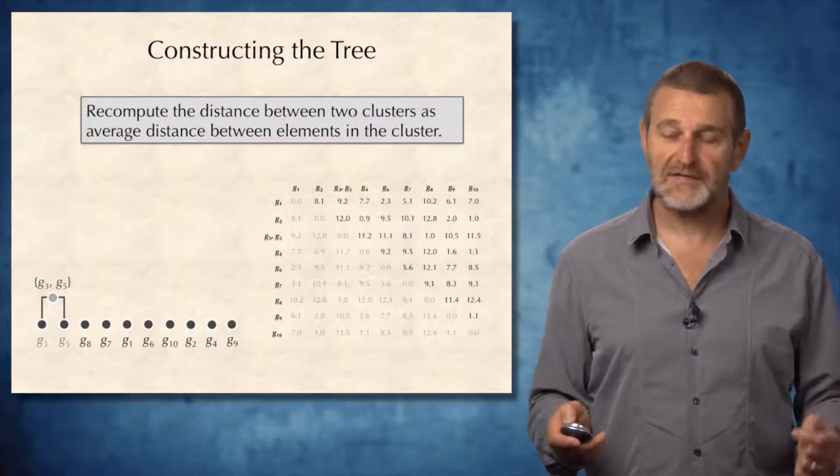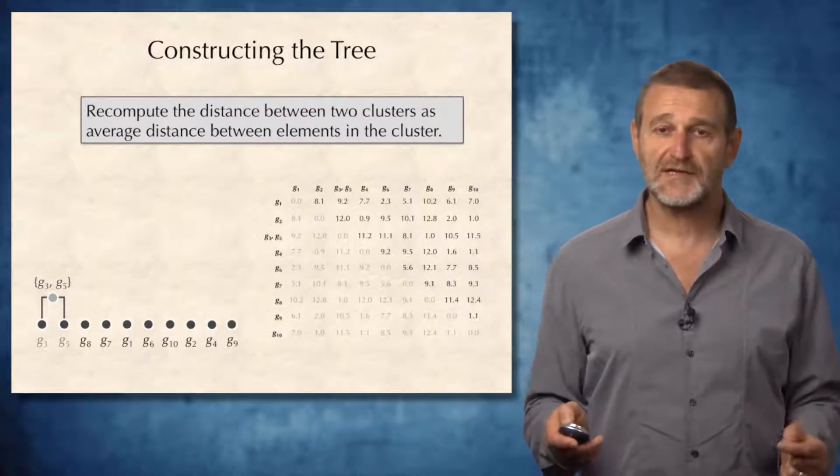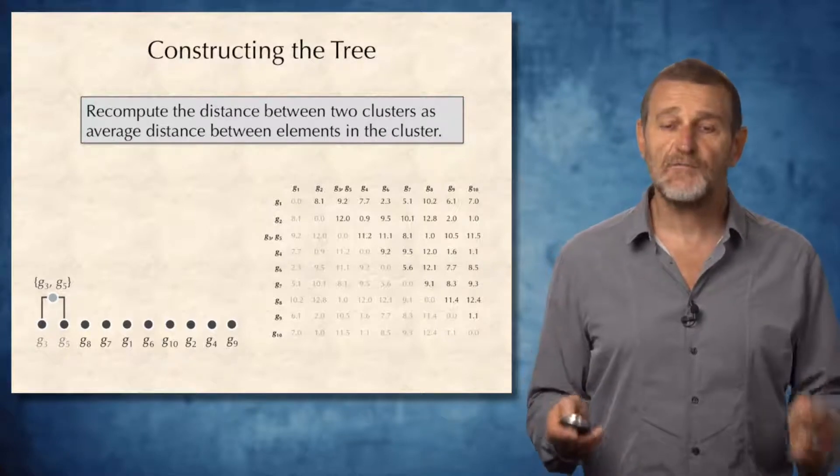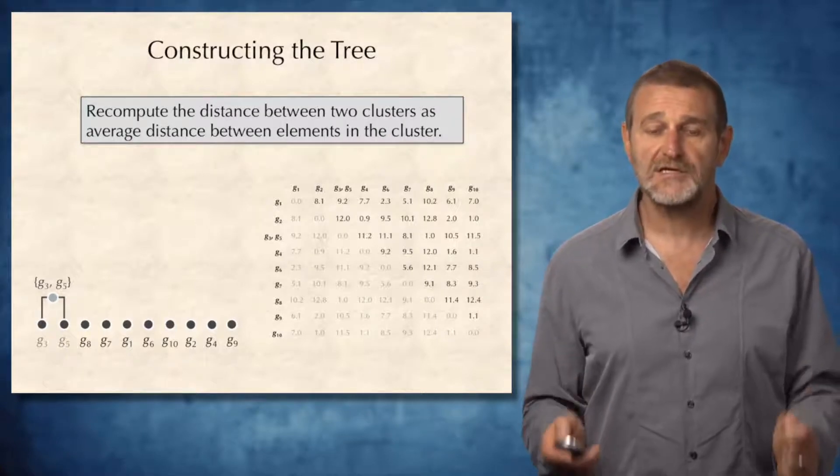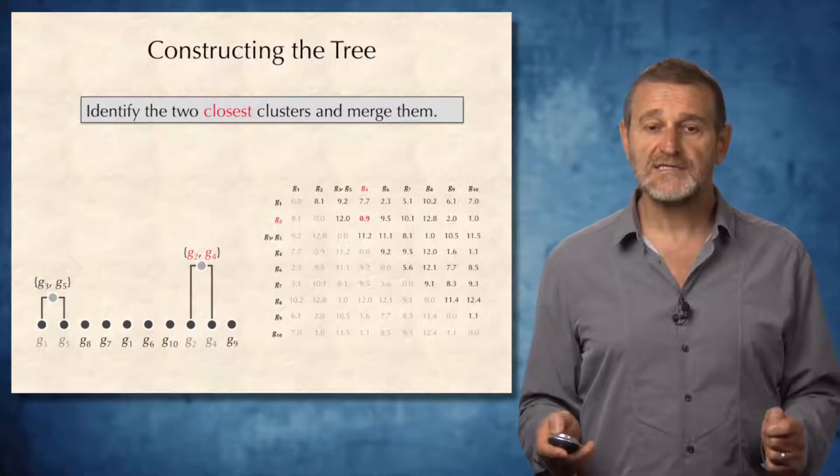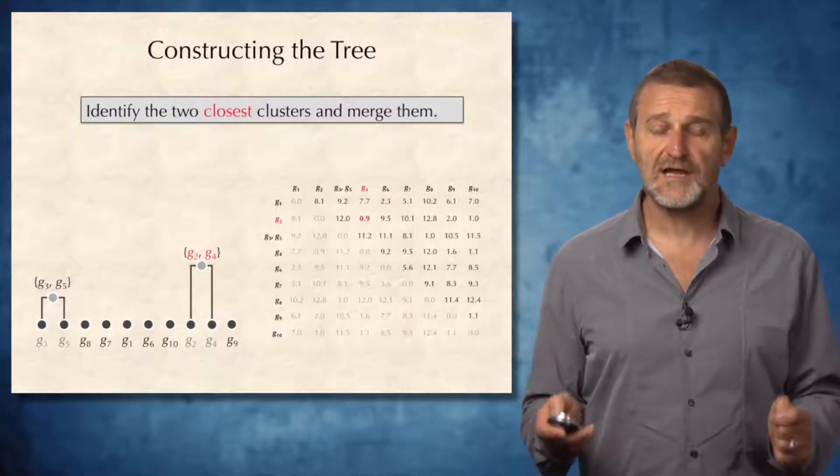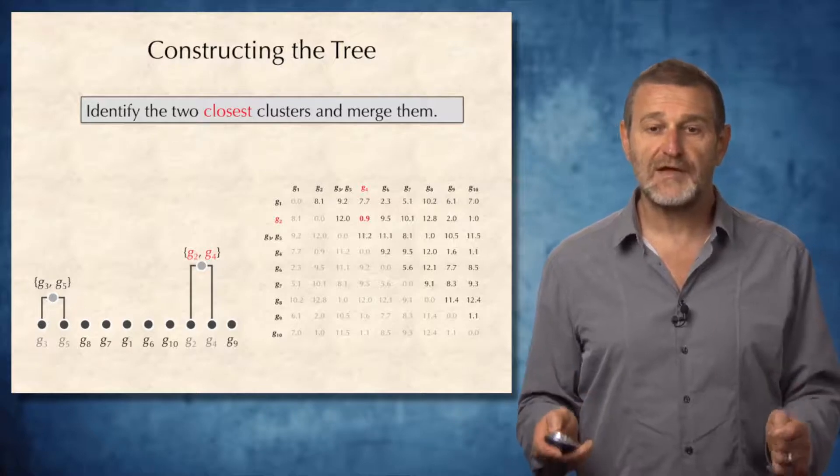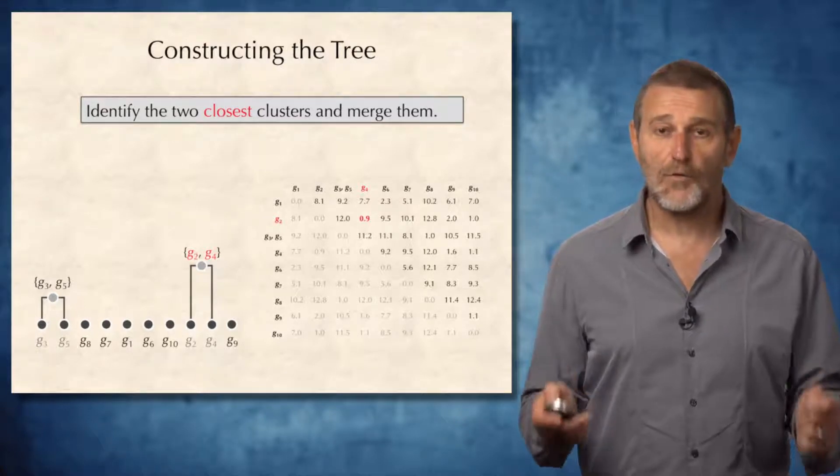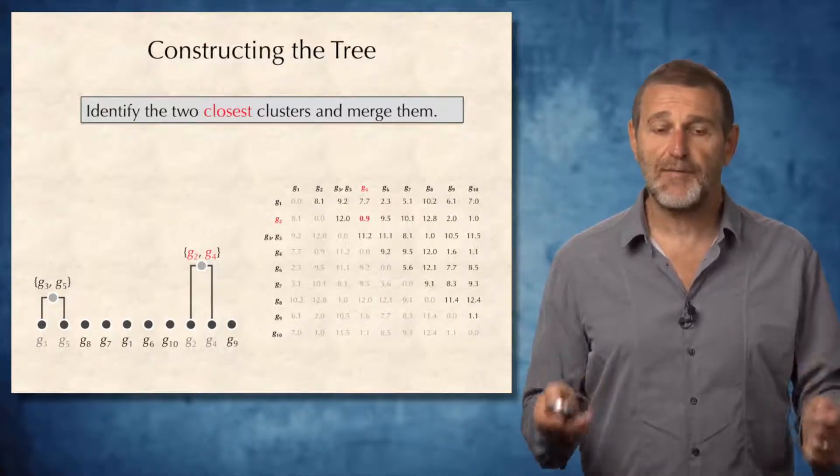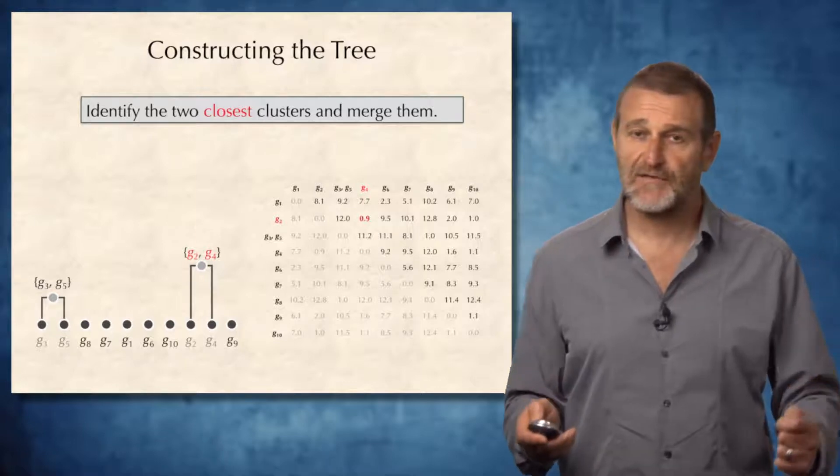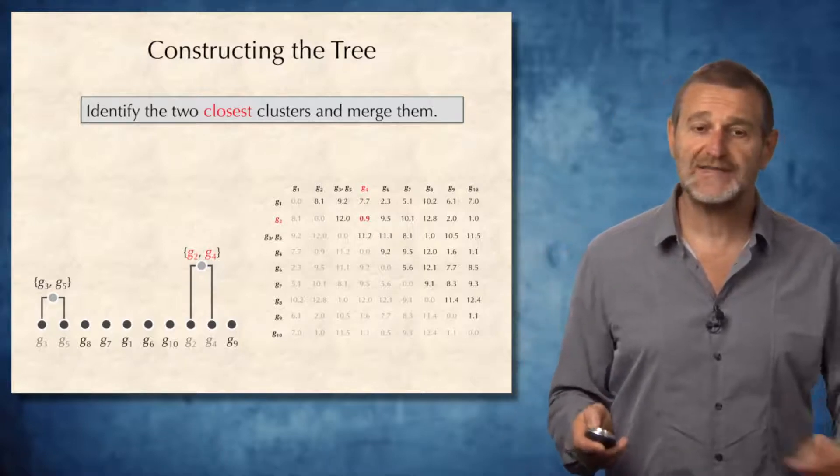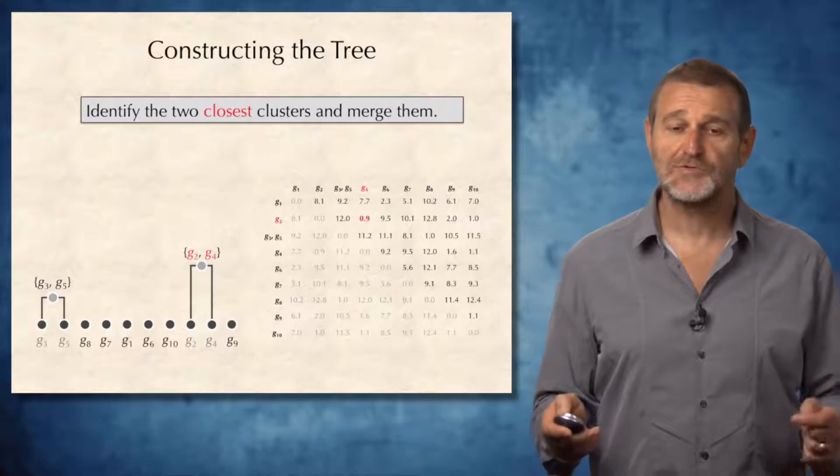And in the newly constructed matrix, I will describe later how the distances in this newly constructed matrix are computed, it once again finds the shortest distance. In this case, the shortest distance is realized between element two and element four, and they are also connected to a parent node by edges. I will define later how to define distances from this parent node to the leaves.